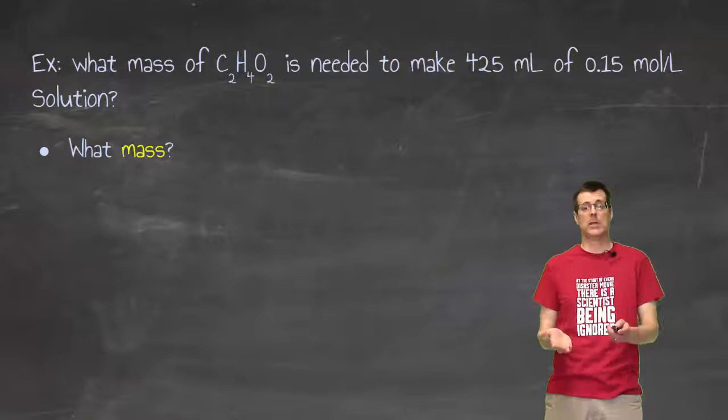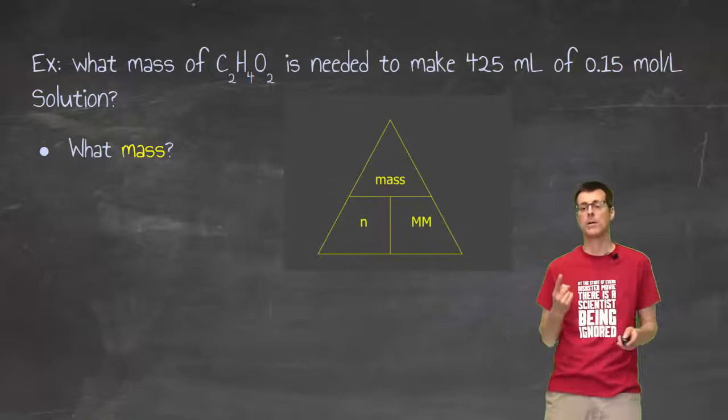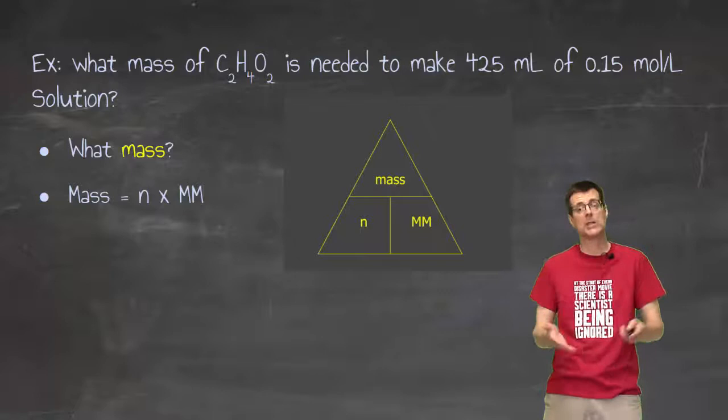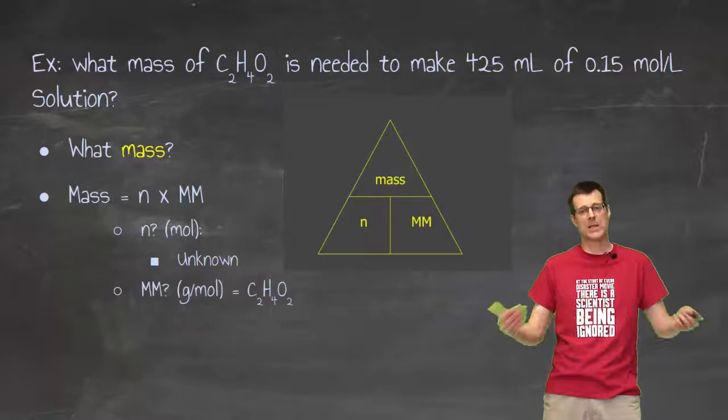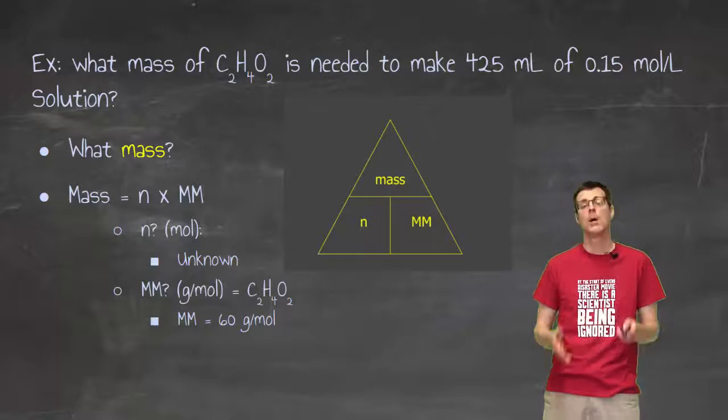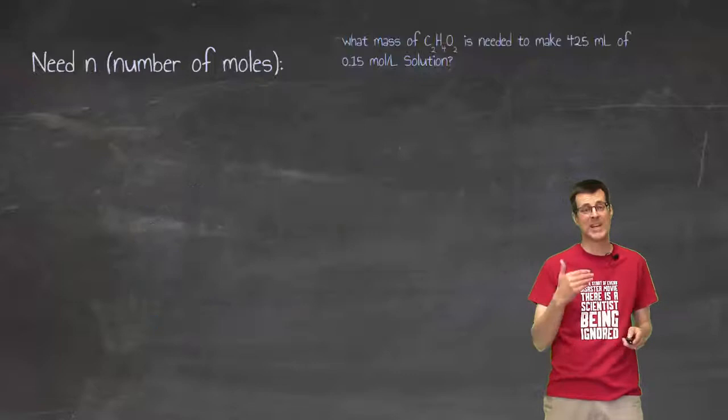When in doubt, answer the question. How do I find mass? Yes, I have a grand total of one way of finding mass, and that is number of moles times molar mass. What do I need? What do I have? I need number of moles. Do I have number of moles? I don't have number of moles, so I can't find mass yet. Do I have the molar mass? Well, molar mass is take the numbers from the periodic table and add them up. Yes, I do. I can do that because I have a chemical formula. Before I can solve this problem then, I need one more piece of information. I need the number of moles.